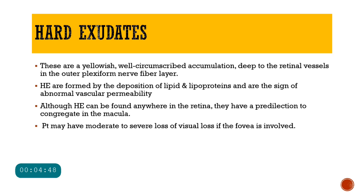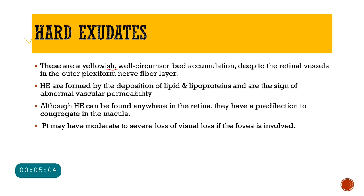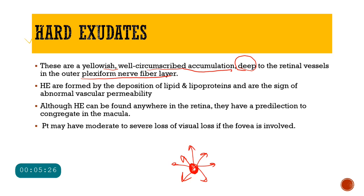The third clinical finding in diabetic retinopathy is the presence of hard exudates. Hard exudates are yellowish, well-circumscribed accumulations present deeper to the retinal vessels in the outer plexiform layer. When a vessel has increased permeability, it leaks fluid, and as that fluid recedes, it leaves behind lipids and lipoproteins which appear yellowish — these are the hard exudates.